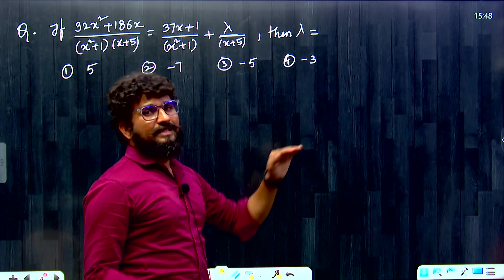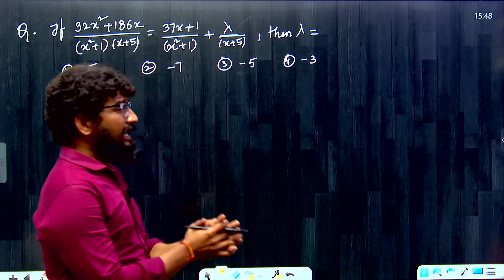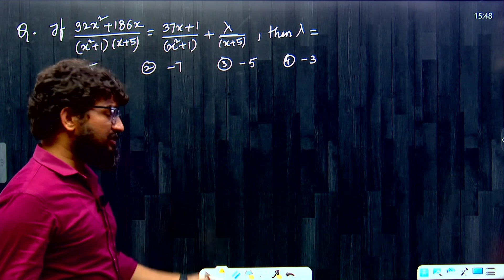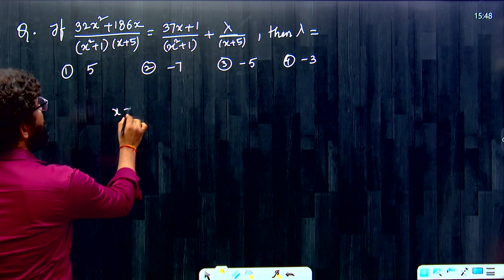Here we need to find out lambda. Single unknown. If there is a single unknown concept, one time, substitute X. Let us substitute X is equal to 0.